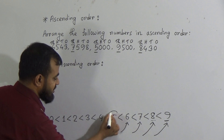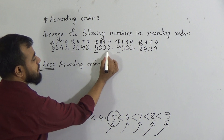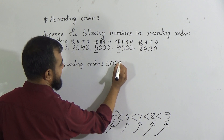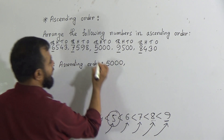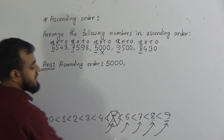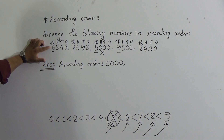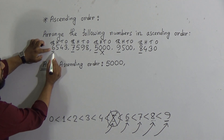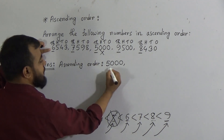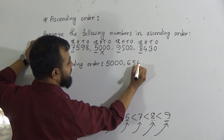So 5,000 will be our smallest number here. 5,000 will be at first place in this ascending order. Now it is done — the next number will be the one with 6 in the thousands place. Which number has 6 in the thousands place? The first number has 6 in the thousands place, so 6,543 will be our next smallest number. After 5,000, our number will be 6,543.